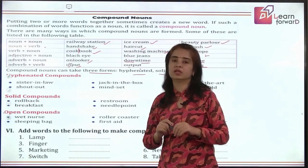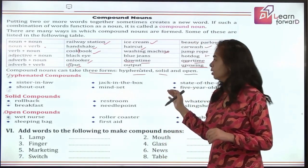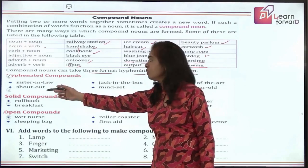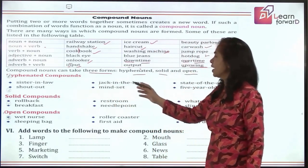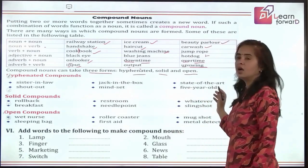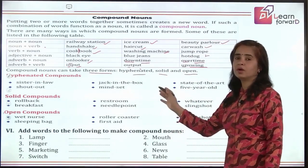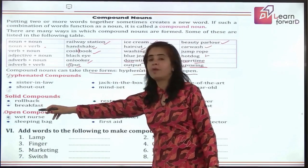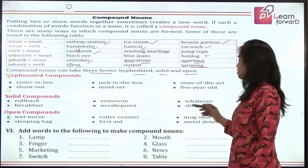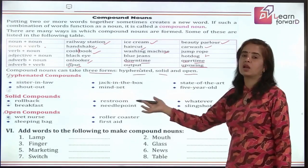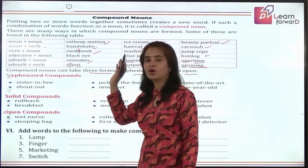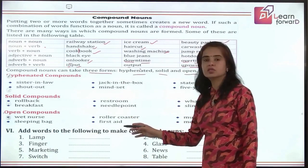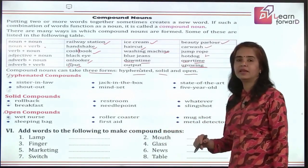More examples of hyphenated compounds: 'sister-in-law', 'shout-out', 'jack-in-the-box', 'mindset', 'state-of-the-art', 'five-year-old'. Solid compounds are written together without a space: 'rollback', 'breakfast', 'restroom', 'needlepoint', 'slingshot'. Open compounds have a space between the words: 'wet nurse', 'sleeping bag', 'roller coaster', 'first aid', 'mugshot', 'metal detector', and many more.